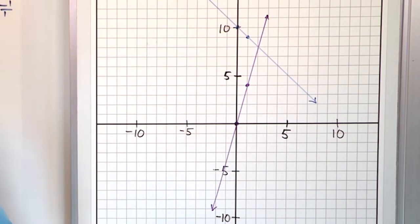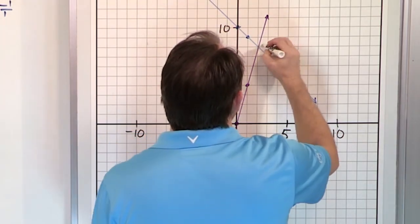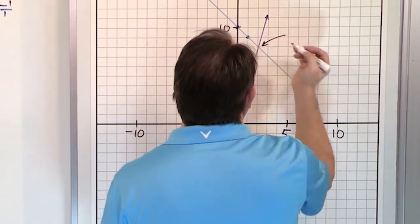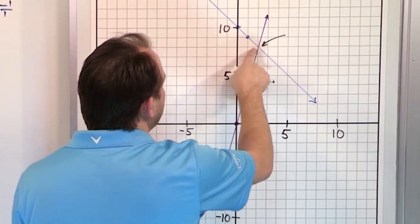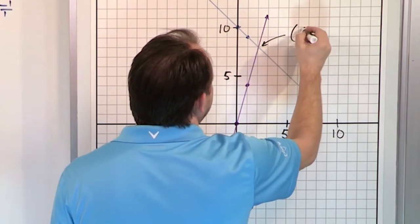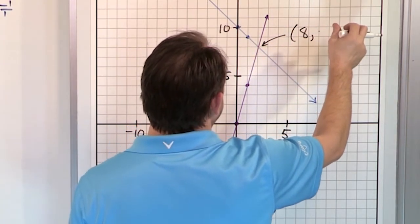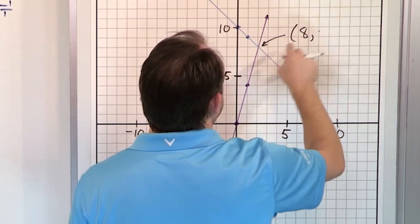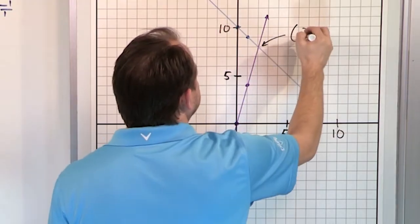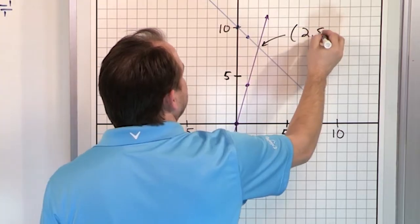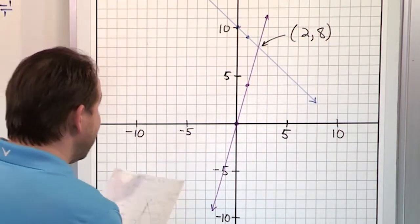When we look over here, we try to figure out where the intersection point is. Obviously it's right here. Here's 5, 6, 7, 8 on the y-axis and 1, 2 on the x-axis. So that means 2 over to the right and 8 up, so x, y is 2, 8. And that is the solution.